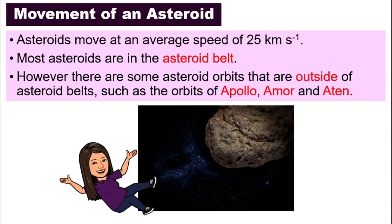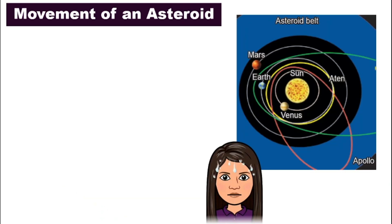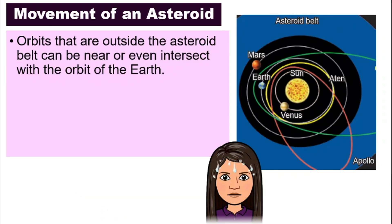But some of the asteroids actually have orbits around the sun outside of the belt — for example, Apollo, Amor, and Athen. This can be very worrying, because these orbits outside the asteroid belt have a chance to be very near or even intersect with the orbit of Earth.